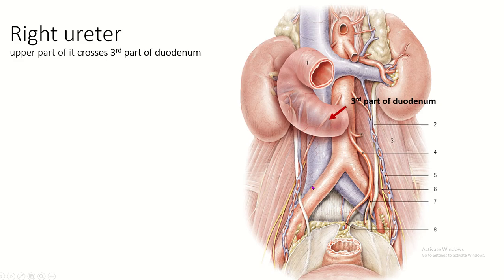This diagram shows the posterior relation of the right and left ureter. This is the duodenum — this is the second part, this is the third part — and the ureter passes at the junction of the second and third parts of the duodenum.